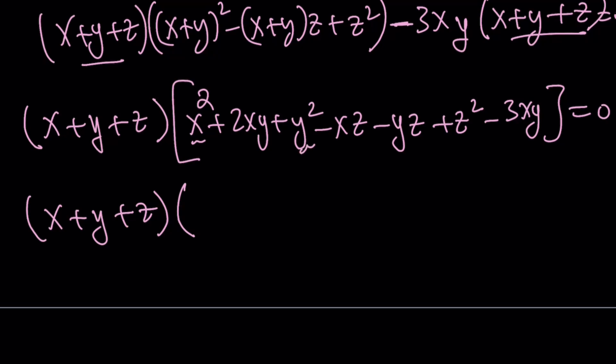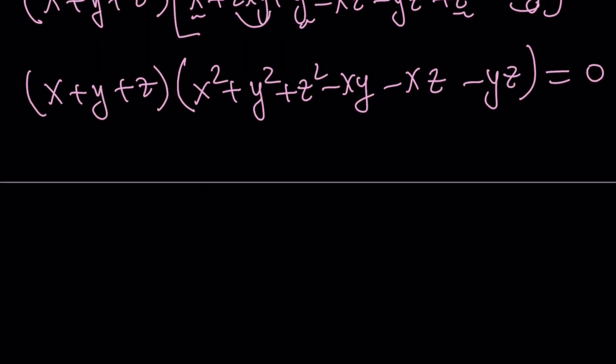x squared, y squared, and z squared. And now I have 2xy minus 3xy, which is going to give me negative xy, negative xz, and negative yz. And this product is equal to zero. Now, can we find x plus y plus z from here? We have to take care of the other factor. But the other factor is something that can be written as a sum of squares.